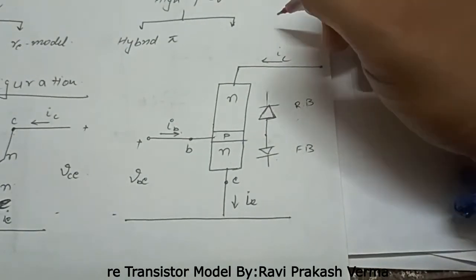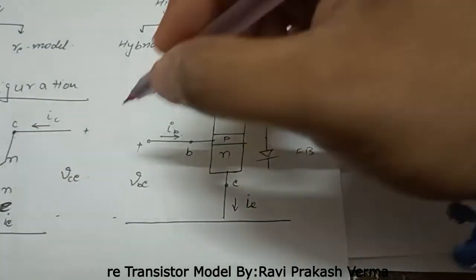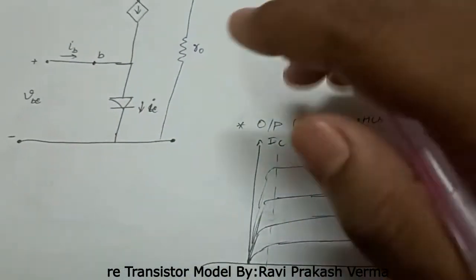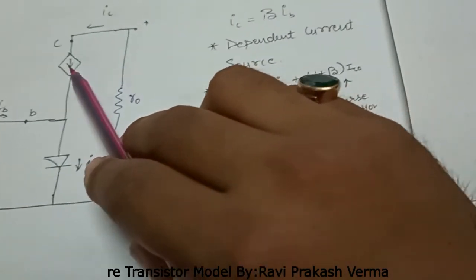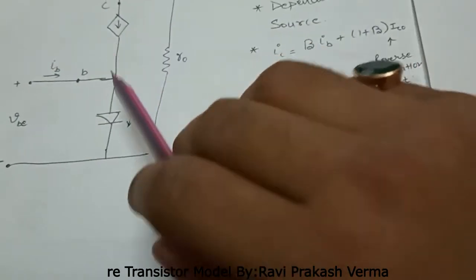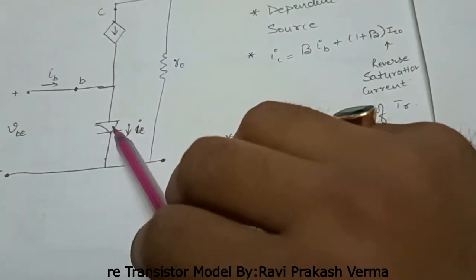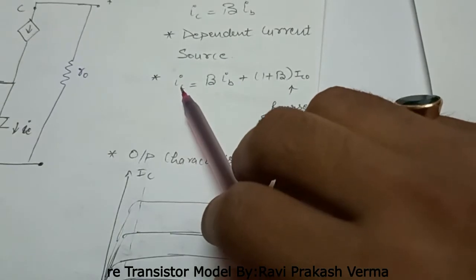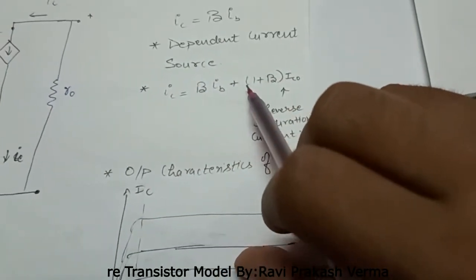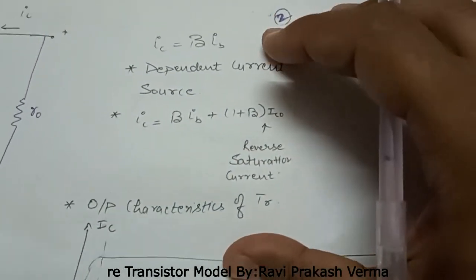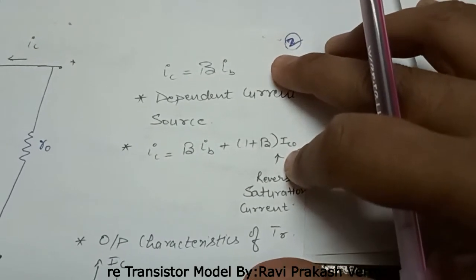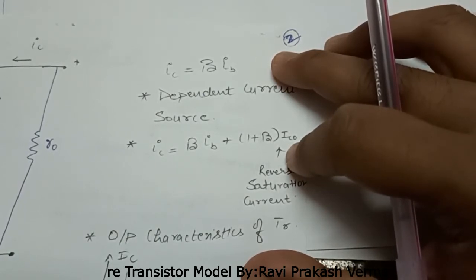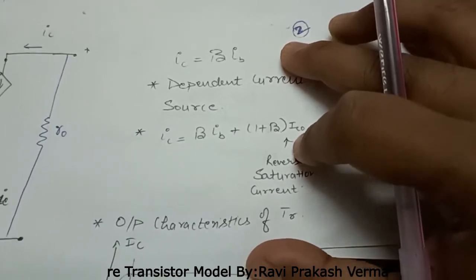Beta is the current gain for the common emitter configuration: beta equals IC over IB. In this configuration, the reverse biased diode is replaced with a dependent current source. We have also seen the equation IC equals beta·IB plus (1 + beta)·ICO, where ICO is the reverse saturation current. Since ICO is in microamperes while the collector current is in milliamperes, we can neglect the reverse saturation current.